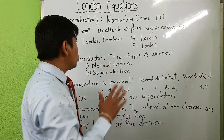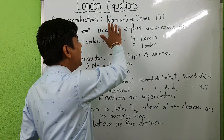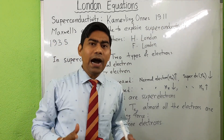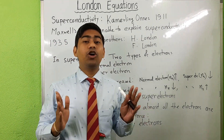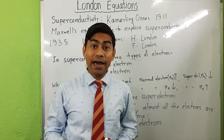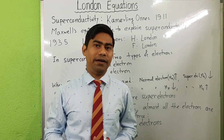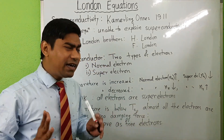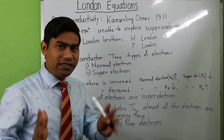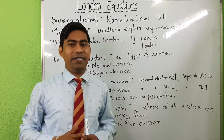Superconductivity was first discovered by Kamerlingh Onnes in 1911. After the discovery of superconductivity, many scientists at that time tried to explain the superconductivity property. But at that time, Maxwell's equations were not sufficient to explain the superconductivity property.